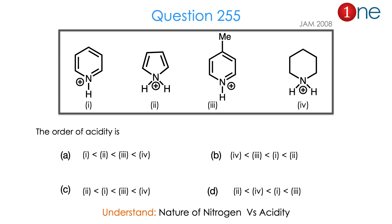Let us look at the next question. Here they are asking about acidity. They given four different protonated amines: the first one is pyridinium (protonated pyridine), the second one is pyrrole protonated, the third one is methylpyridine protonated, and the fourth one is a piperidinium layer. They are asking the order of acidity — so you have to find which one loses H⁺ easily. The question is really about the nature of nitrogen versus acidity. The answer is B. Let us see how.